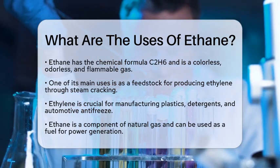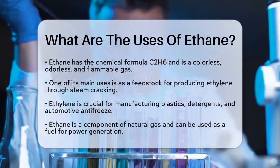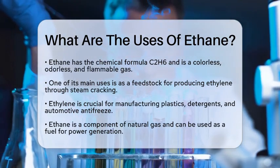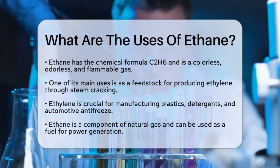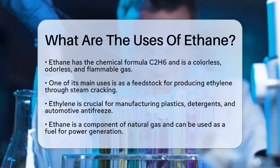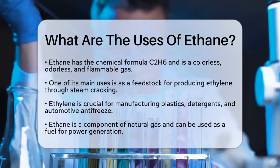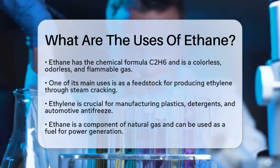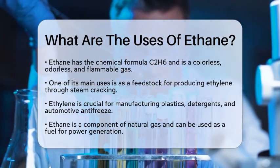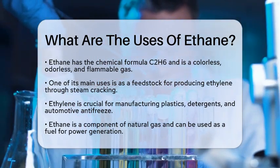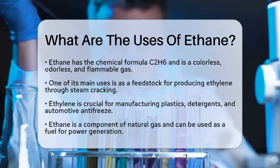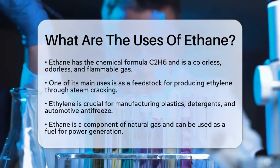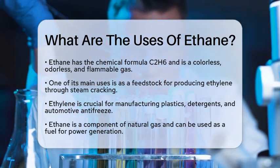One of the primary uses of ethane is as a feedstock for producing ethylene. Ethylene is created through a process called steam cracking, where ethane is heated with steam. This process breaks ethane down into ethylene and other byproducts. Ethylene is essential in making plastics, detergents, and automotive antifreeze.